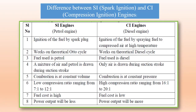The differences between SI (spark ignition) and CI (compression ignition) engines: ignition in SI engines uses a spark plug; CI engines use a fuel injector. SI engines work on the Otto cycle; CI engines work on the diesel cycle. SI engines use petrol; CI engines use diesel. In SI engines, a mixture of air and petrol is drawn during the suction stroke; in CI engines, only air is drawn. Combustion in SI engines occurs at constant volume; in CI engines at constant pressure. Compression ratio in SI engines ranges from 7:1 to 12:1; in CI engines from 16:1 to 24:1. Fuel cost is higher for petrol; lower for diesel. Power output is lower in petrol engines and higher in diesel engines.